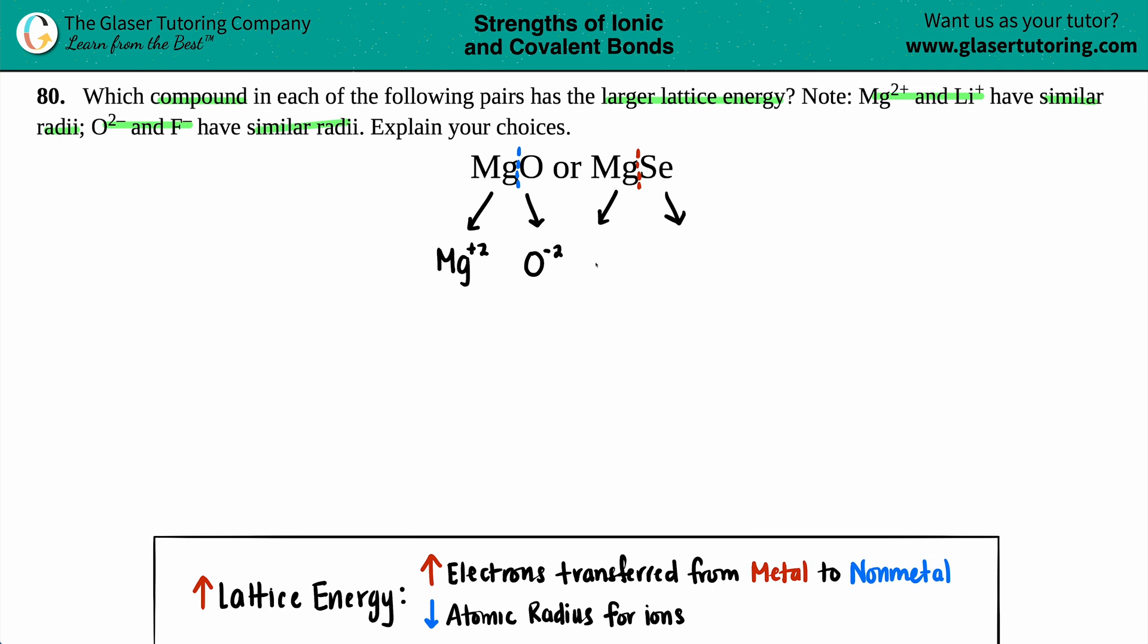You have magnesium 2+ and selenium is in the same group as oxygen, so that's Se²⁻. When trying to find the larger lattice energy, always look for the differences. In this case, for both of them, magnesium is exactly the same.